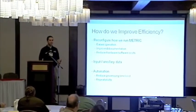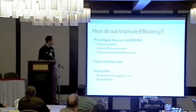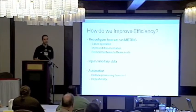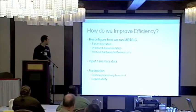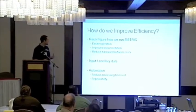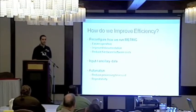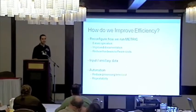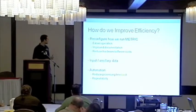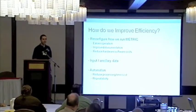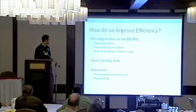How do we generate estimates faster, cheaper, and easier, and help the state do this on their own? Because they're going to take METRIC and run it forward, so they need to be able to do it easily in-house. What we did was reconfigure METRIC away from the ERDAS model. We wanted to make it easier to use, improve the documentation, and reduce hardware and software costs if possible. Another way to improve efficiency is different input data and different ancillary data — how can we speed up the whole process? And finally, automation — what can we do to automate this?